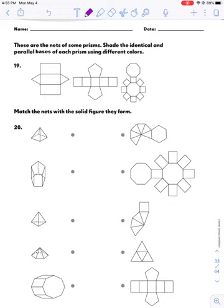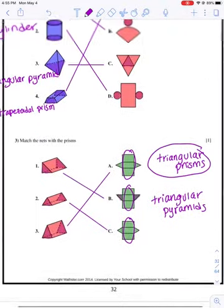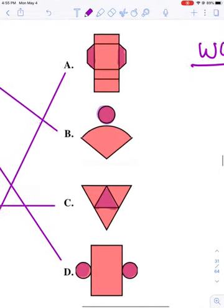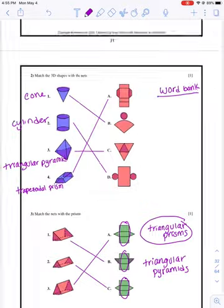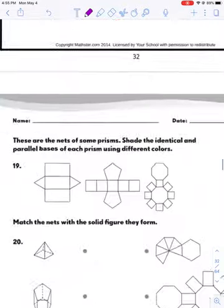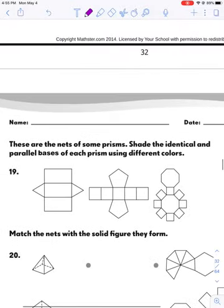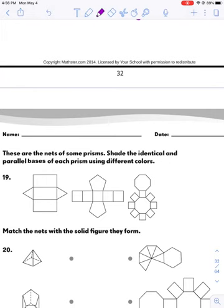One last page to do. On problem 19 here, they're telling us that these are the nets of some prisms, so they've already flattened them for us, and they want us to identify the bases. Basically, what they're asking us to do is color in all of the bases - that's what they want us to do. Pause the video, try number 19, see if you can identify which are the bases.